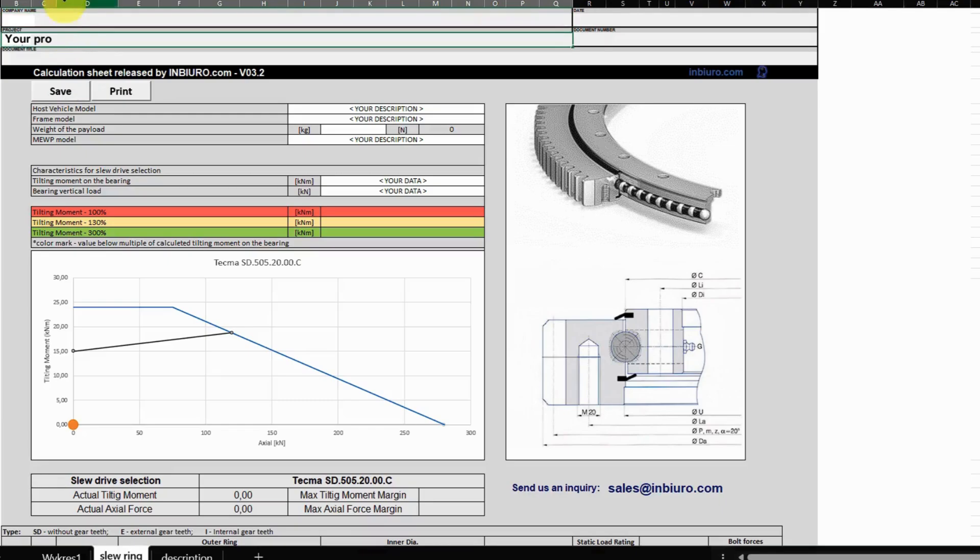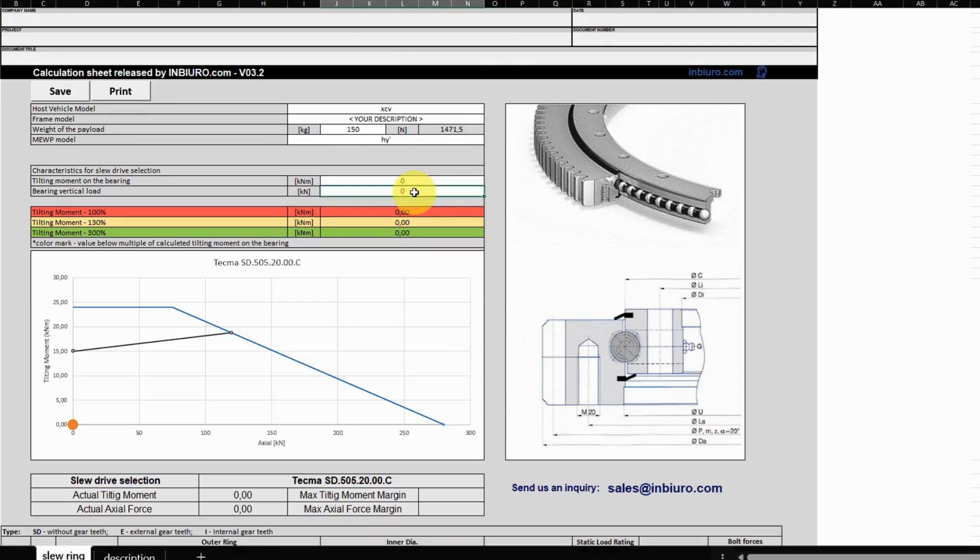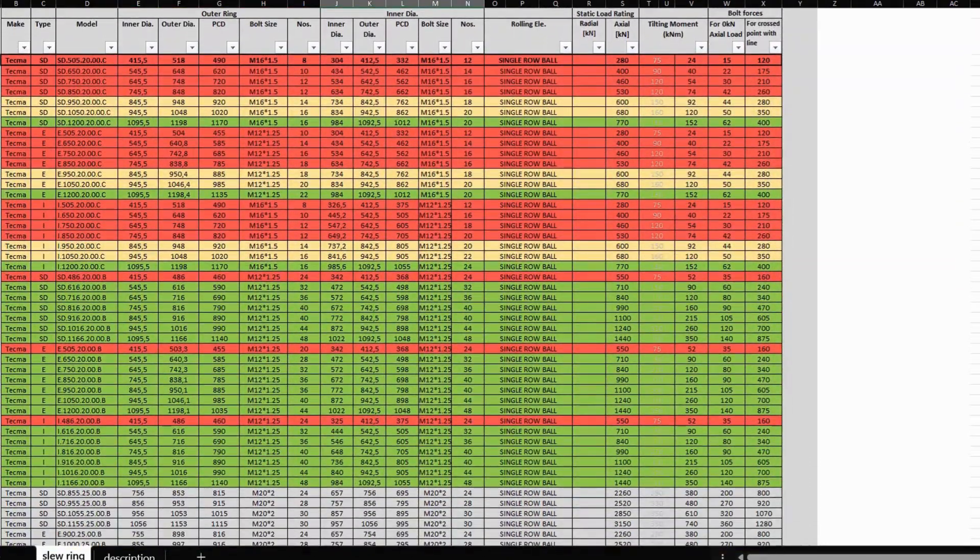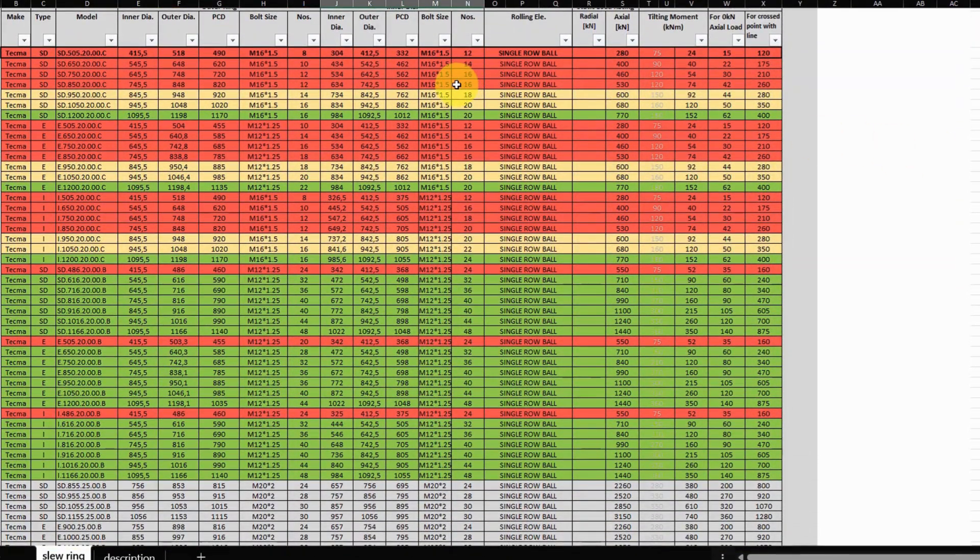In the header, you can type your project name, business name as reference, and crane capacity. Once you have typed in the calculated axial load and tilting moment in relevant places, the selection tool highlights all the bearings and drives with corresponding colors.